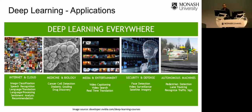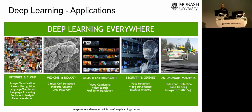There are applications in media and entertainment, security and defense — for example face detection, video surveillance, and satellite imagery, which can be used to detect icebergs and warn ships of their locations. Similarly, deep learning has critical applications in autonomous driving such as pedestrian detection, lane detection, and recognizing traffic signs.